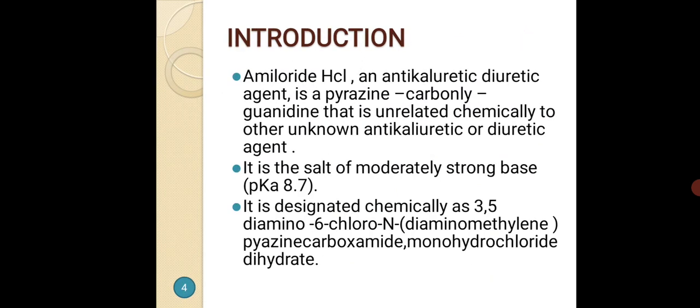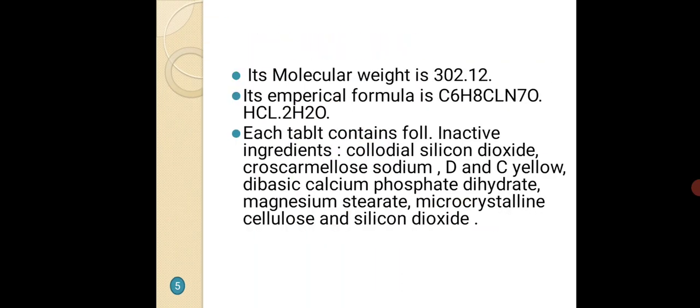Amiloride hydrochloride is an anticaliuretic diuretic agent derived from pyrazine carbonyl guanidine, that is unrelated chemically to other known anticaliuretic or diuretic agents. It is the salt of a moderately strong base with pKa of 8.7. It is designated chemically as 3,5-diamino-6-chloro-N-(diaminomethylene)pyrazine-carboxamide monohydrochloride dihydrate. Its molecular weight is 302.12 and its empirical formula is C6H8ClN7O·HCl·2H2O.